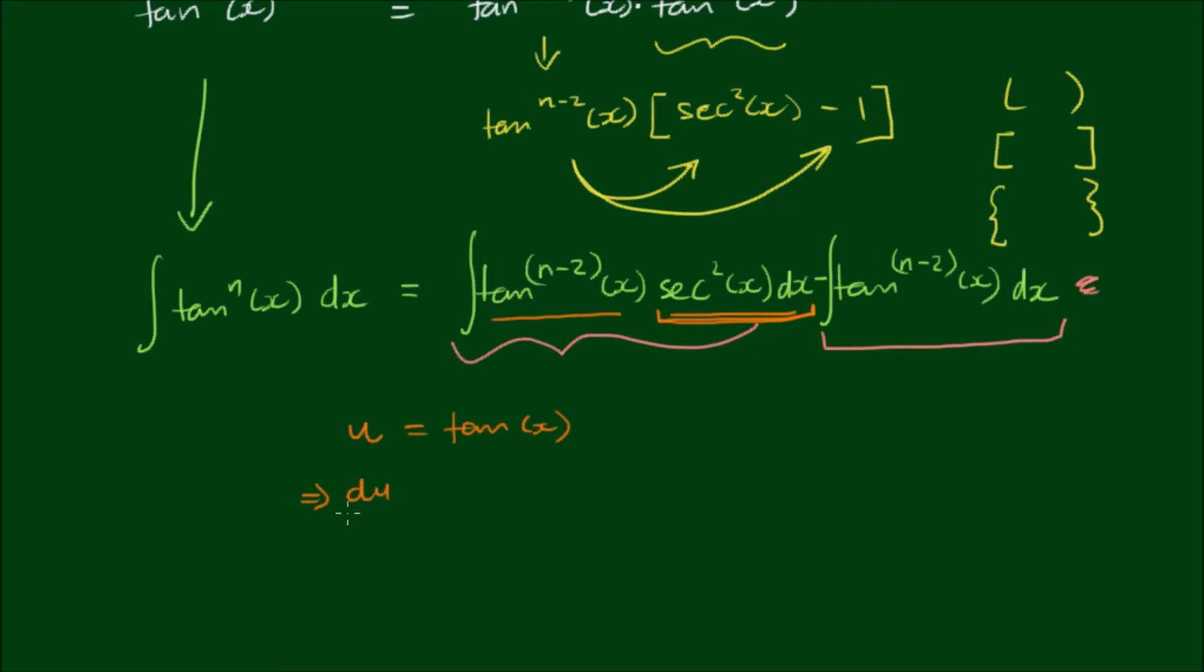The derivative of u then, du on dx is equal to sec squared of x. And of course by the principles of differentials, I can separate the differentials and write du is equal to sec squared of x dx. We can see that then the integral of tan to the n minus 2 by sec squared x dx is equal to the integral of u to the n minus 2.